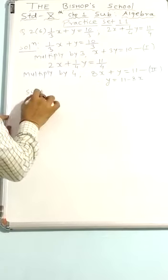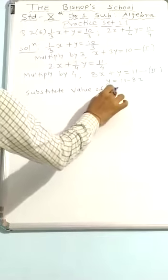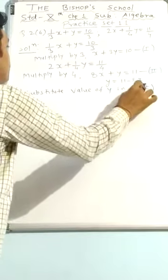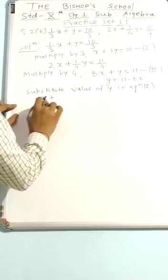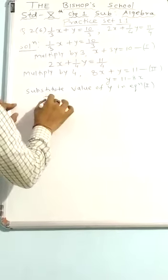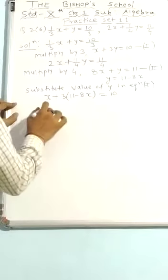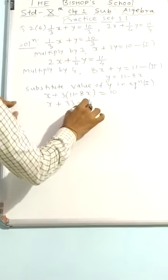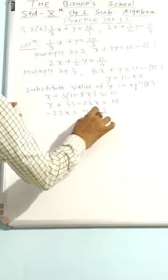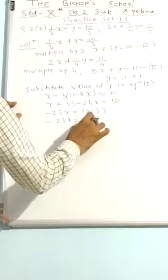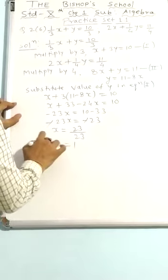Substituting the value of y in equation 1: x plus 3 times (11 minus 8x) equal to 10. That gives x plus 33 minus 24x equal to 10, so minus 23x equal to 10 minus 33, which is minus 23x equal to minus 23. Cancelling the minus sign, 23 upon 23, therefore x equal to 1.